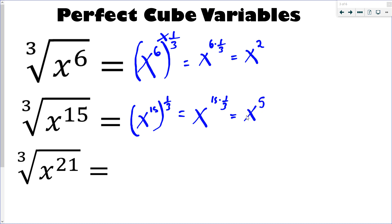So what you're probably seeing is that all I end up doing is dividing my exponent by 3. The rule is that a variable with an exponent is a perfect cube if the exponent is divisible by 3. Simple example: x to the 21. Well, 21 is divisible by 3. If I divide 21 by 3, I get 7. So the cube root of x to the 21 is x to the 7. It's that easy.